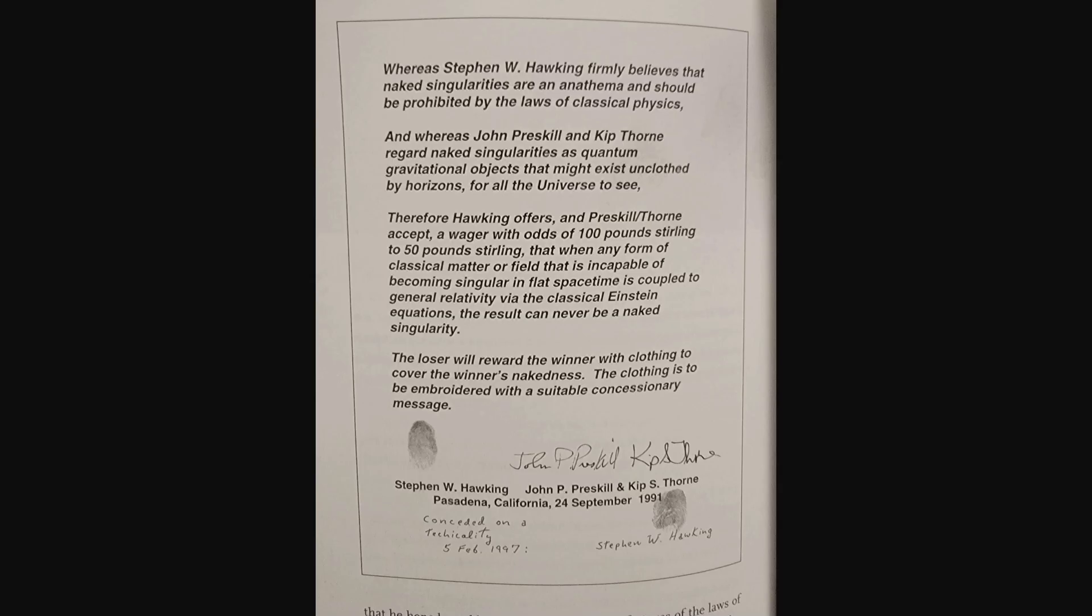However, Kip Thorne and John Preskill believed the formation of naked singularities to be quite possible. The award for a bet of such gravity and seriousness was to be clothing to cover the winner's nakedness. This bet was not expected to be settled for decades, or even within their lifetimes.